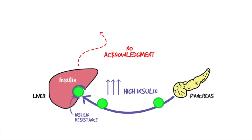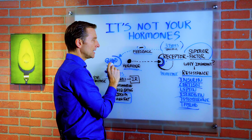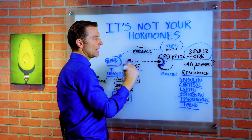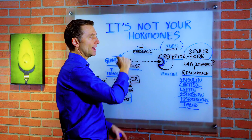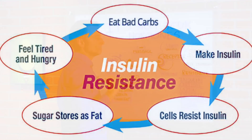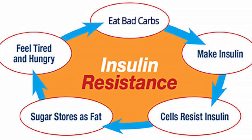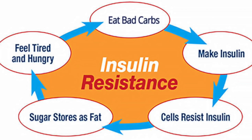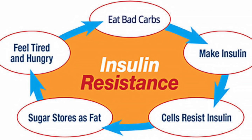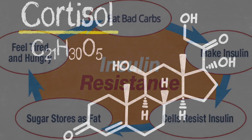We have the receptor that's listening, the hormone and the gland are talking, they connect, and we have normal function. This is a very common problem, especially when we get into insulin resistance and even cortisol resistance.